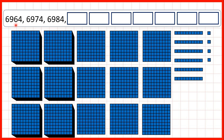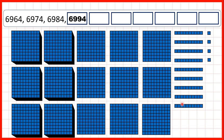Now we start with 6,964 — that's six thousands, nine hundreds, six tens and four ones. If we're counting in tens, we can add one ten each time. So doing that gives us 6,974, 6,984, and another ten means we get 6,994.